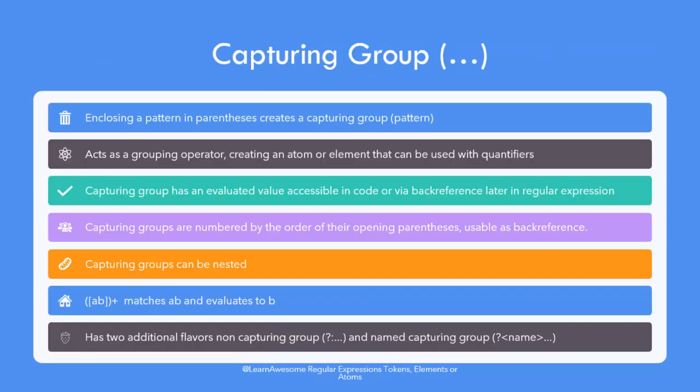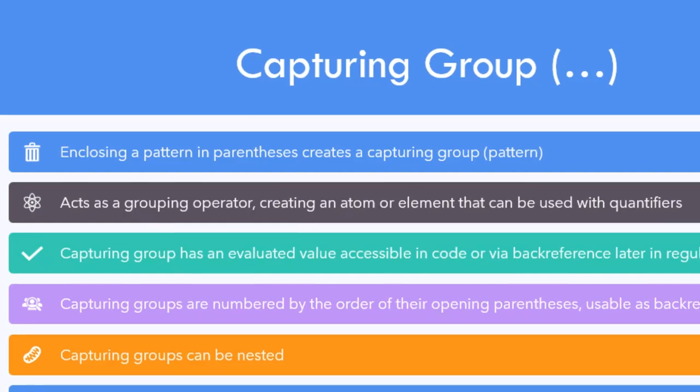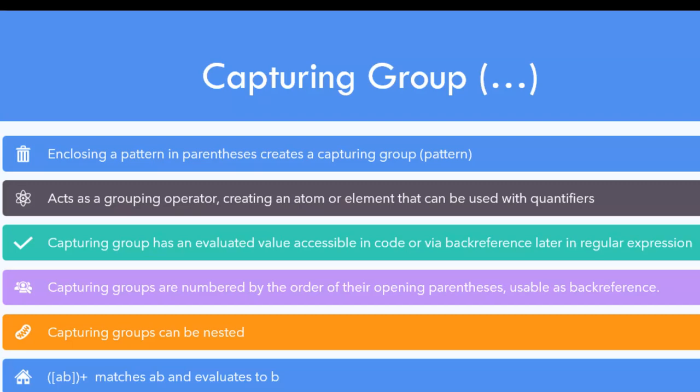Capturing groups are patterns enclosed within parentheses that act like a grouping operator, allowing you to treat the entire thing as a single atom or element in a regular expression. You can apply quantifiers on them or use them in assertions. Another interesting ability of capturing groups is that they are evaluated to a matched value that can later be reused in the regular expression as a back reference, or as a return value in code. A separate dedicated video on capturing groups will cover this in more detail.